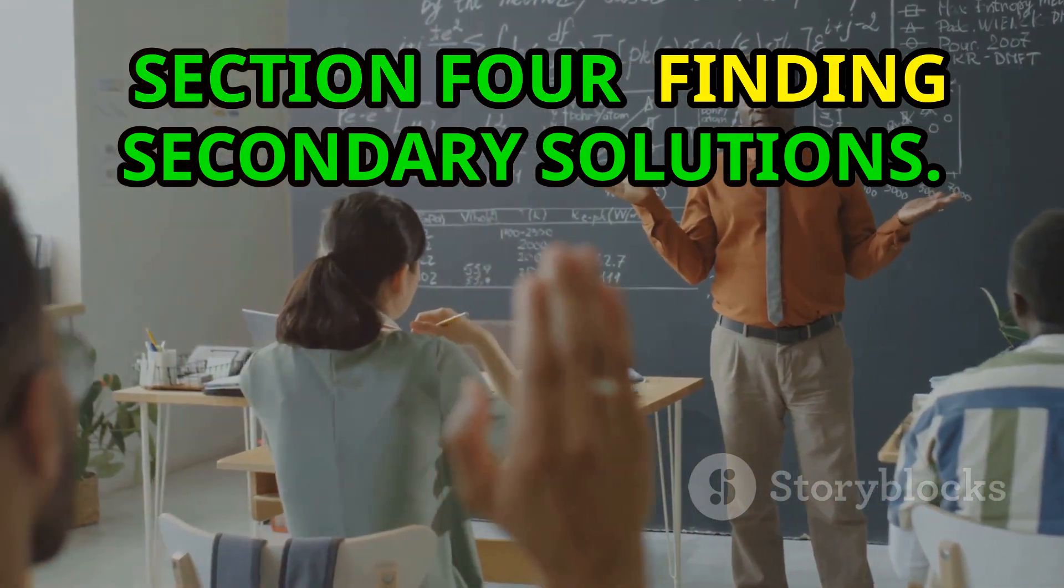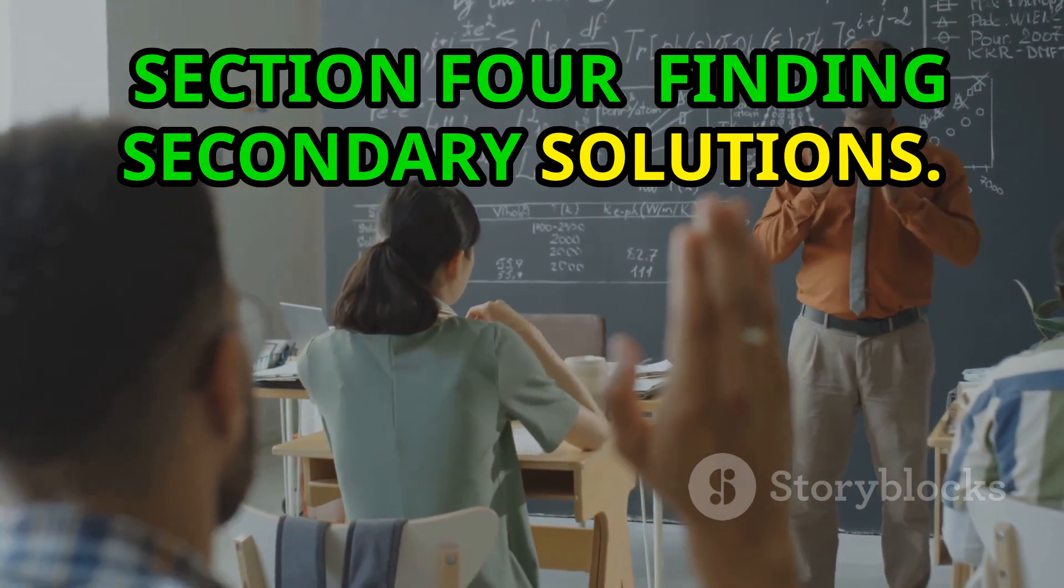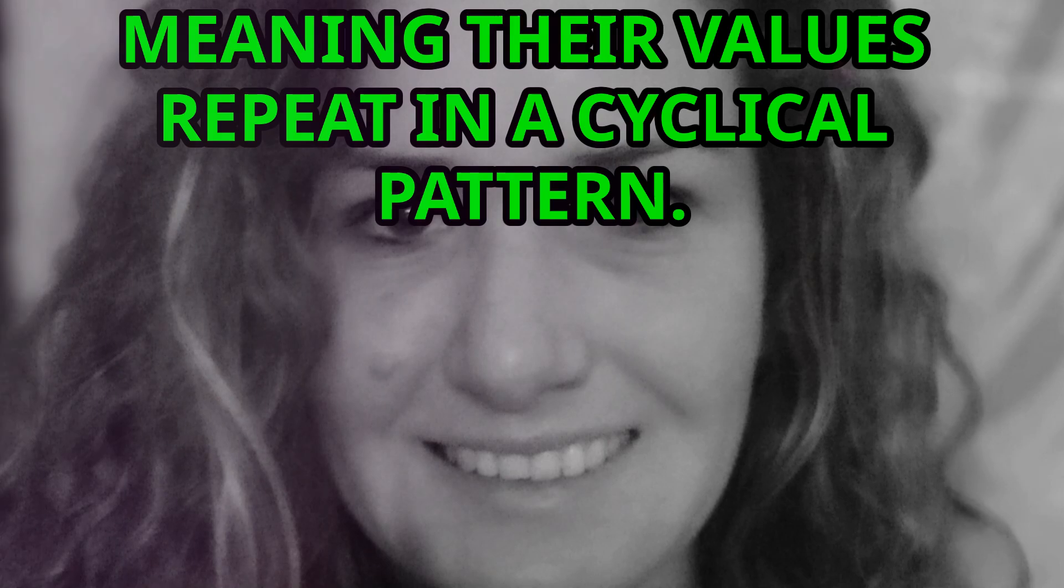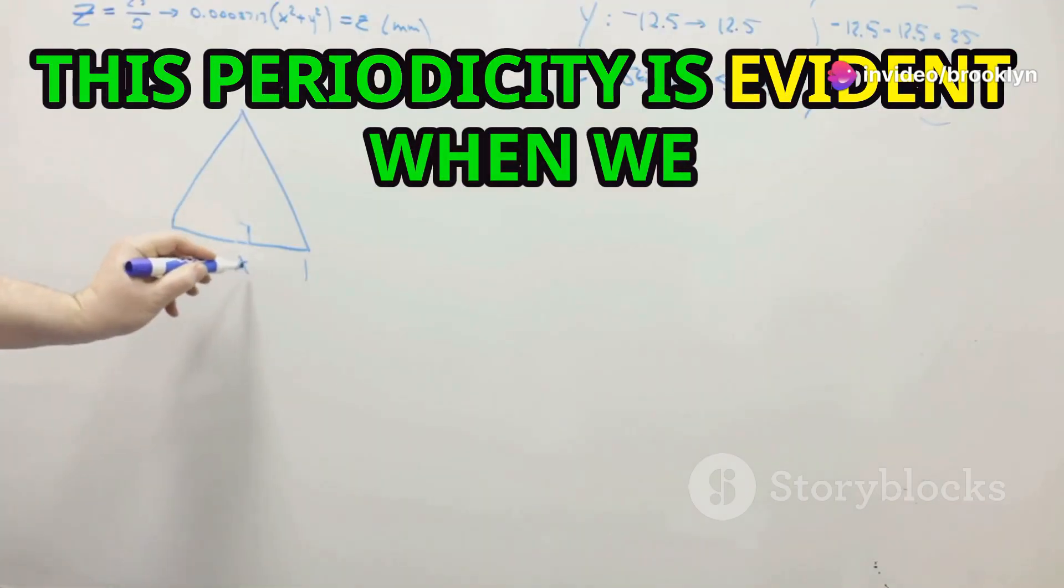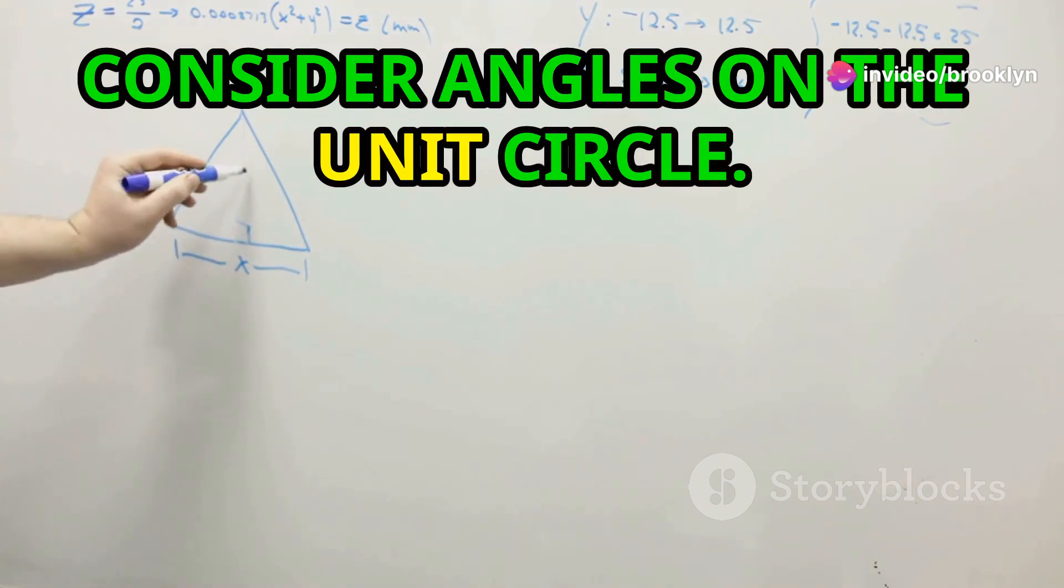Section 4: Finding secondary solutions. Trigonometric functions are periodic, meaning their values repeat in a cyclical pattern. This periodicity is evident when we consider angles on the unit circle.